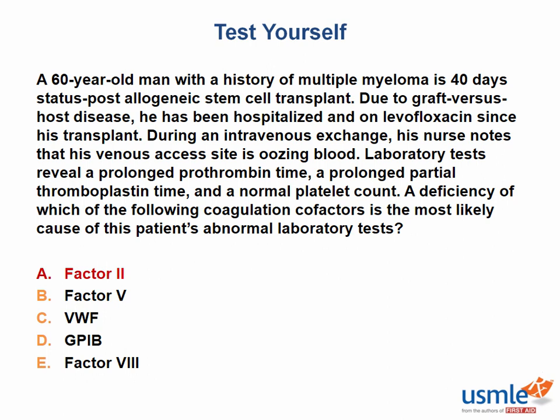To review our other answers: factor 5 is not a vitamin K-dependent factor, so this eliminates that answer choice. Von Willebrand factor deficiency would be von Willebrand's disease, which does present with bleeding and a normal platelet count, but it wouldn't affect the PT and PTT. Glycoprotein 1B deficiency would be Bernard-Soulier syndrome — this would also lead to bleeding with a normal platelet count, but it shouldn't affect the PT and PTT. Factor 8 deficiency, or hemophilia A, would present with delayed deep bleeding, but would not prolong the PT.